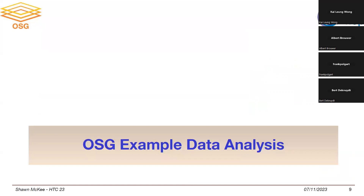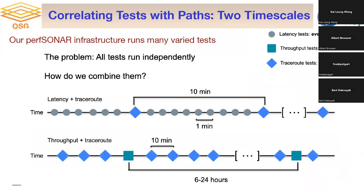I want to show you the complexity we have to deal with in looking at these network metrics. We have tests that run to determine the path through the network — the layer-3 path, basically traceroute. We run that approximately every 10 minutes between our sources and destinations. Separately, on a timescale of once every 6 to 24 hours, we'll do a throughput test, and we also run latency tests summarized every minute. With these different timescales, you have to figure out how to combine them effectively and make use of topology information along with the measurements.